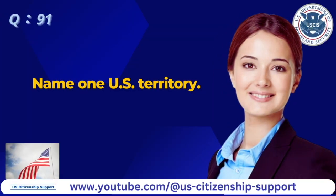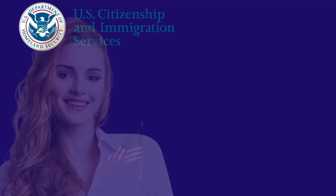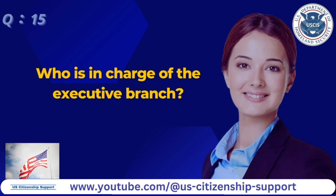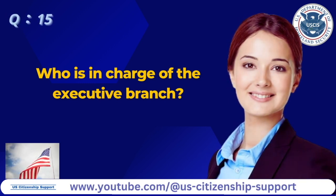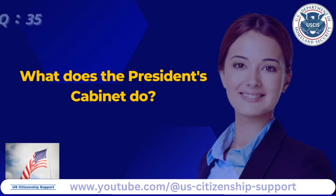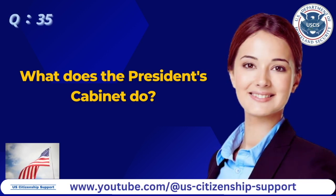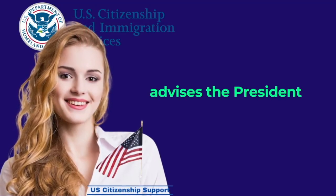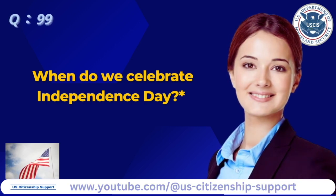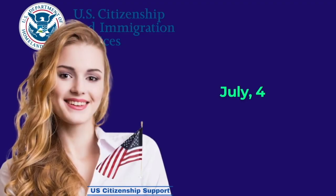Name one U.S. territory. Guam. Who is in charge of the executive branch? The President. What does the President's Cabinet do? Advises the President. When do we celebrate Independence Day? July 4th.